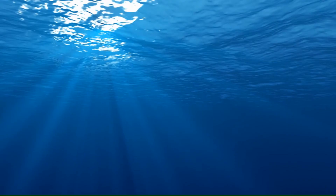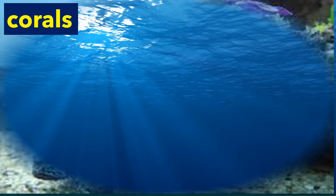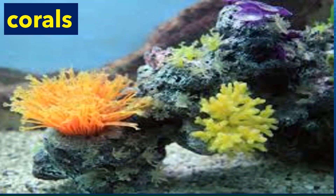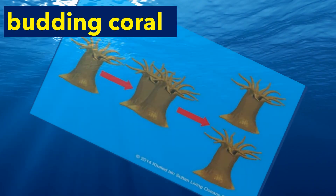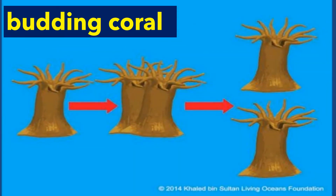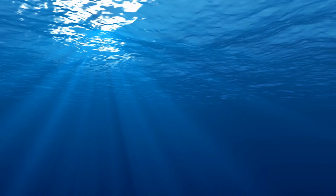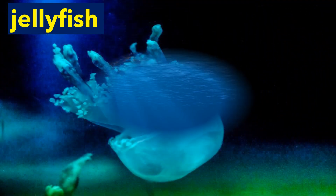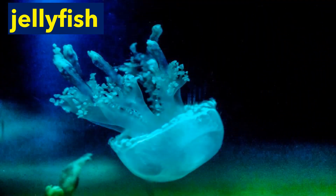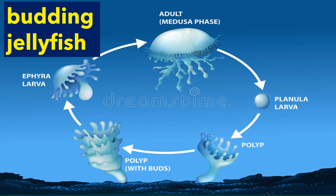A bud grows into the body of a parent hydra, and then when it breaks off it grows into a new hydra. Coral also undergoes budding — a bud grows into the body of a parent coral, breaks off, and grows into a new coral. Jellyfish also undergoes budding; the polyp stage of jellyfish reproduces asexually by budding.